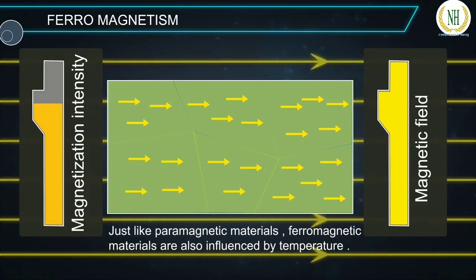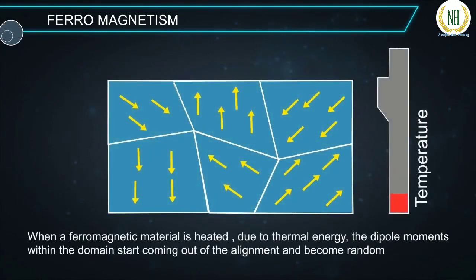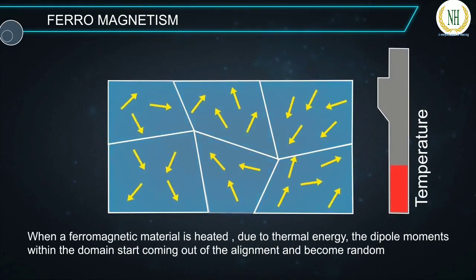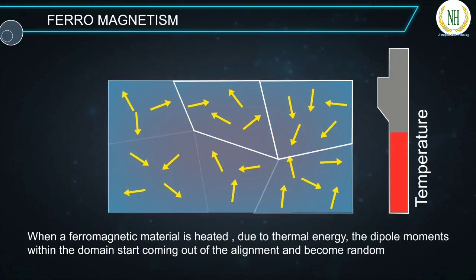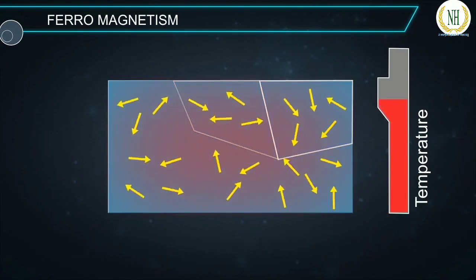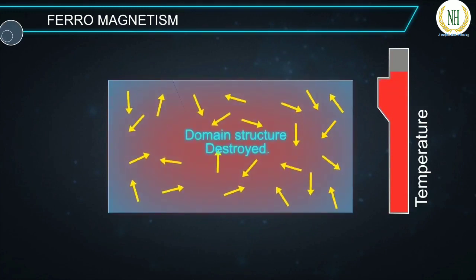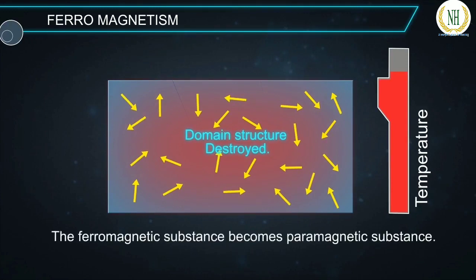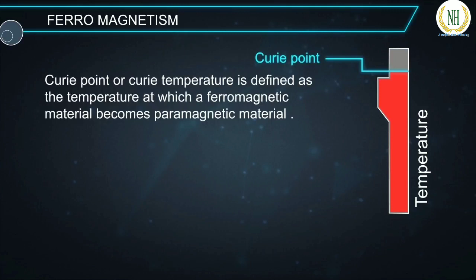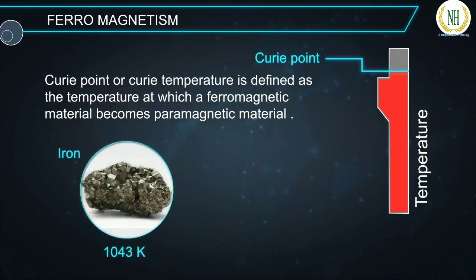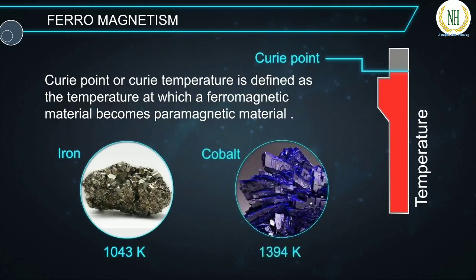Just like paramagnetic materials, ferromagnetic materials are also influenced by temperature. When a ferromagnetic material is heated, the dipole moments within the domains start to lose alignment and become random. At a particular temperature, the domain structure becomes completely destroyed and the ferromagnetic substance becomes paramagnetic. This particular point is called the Curie point. The Curie temperature is defined as the temperature at which a ferromagnetic material becomes paramagnetic. The Curie temperature of iron is 1043 K and for cobalt is 1394 K.